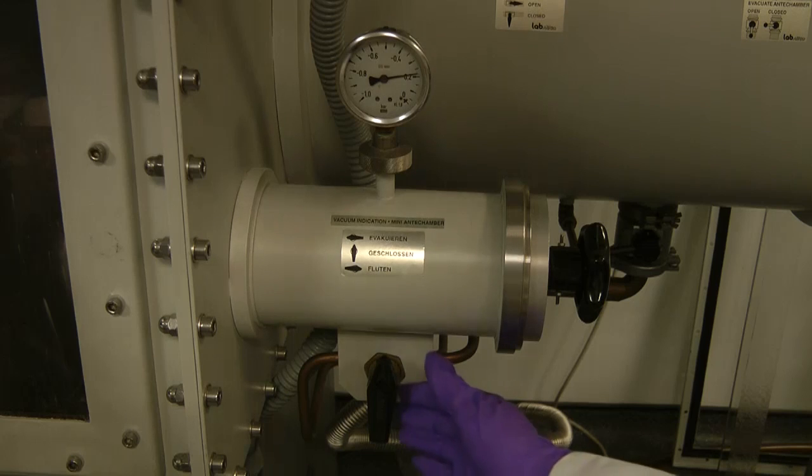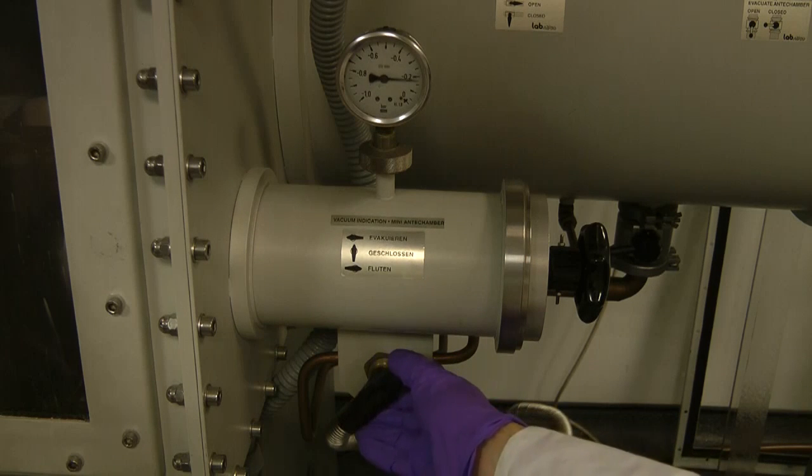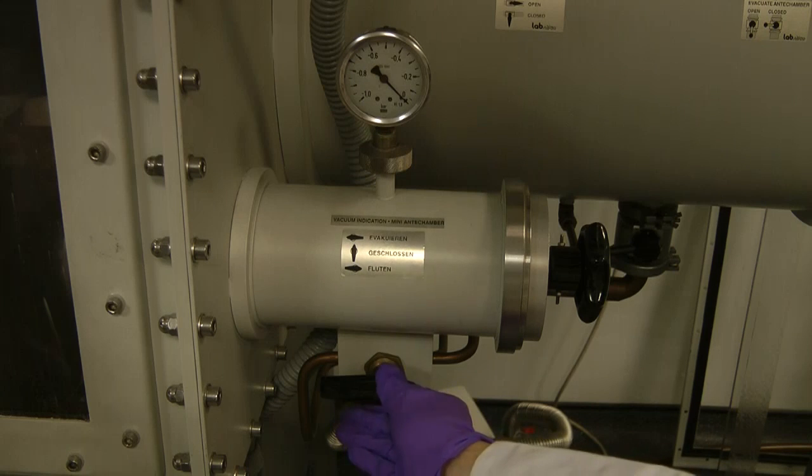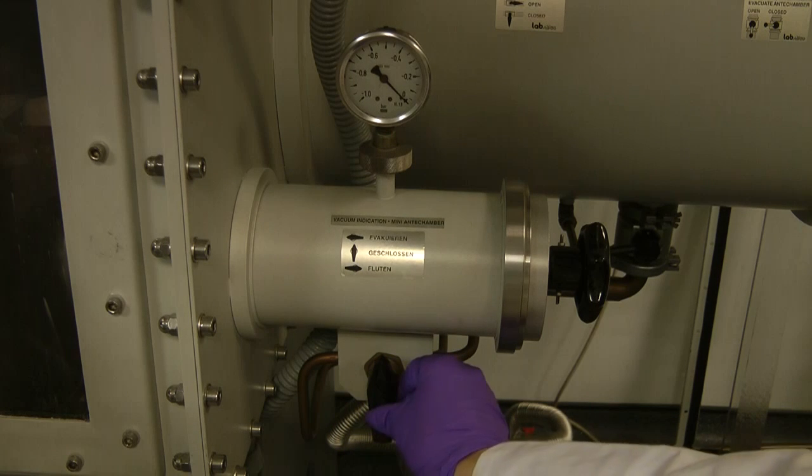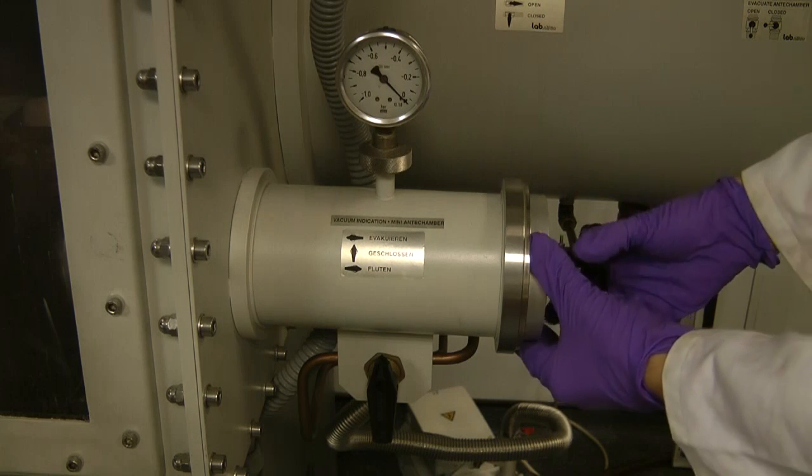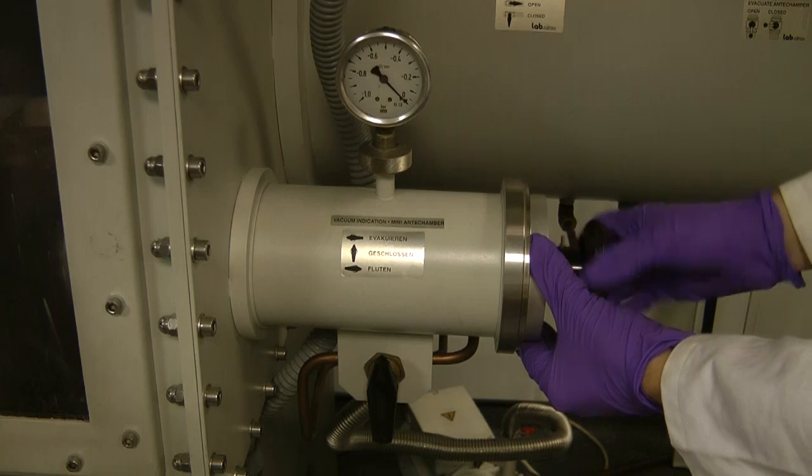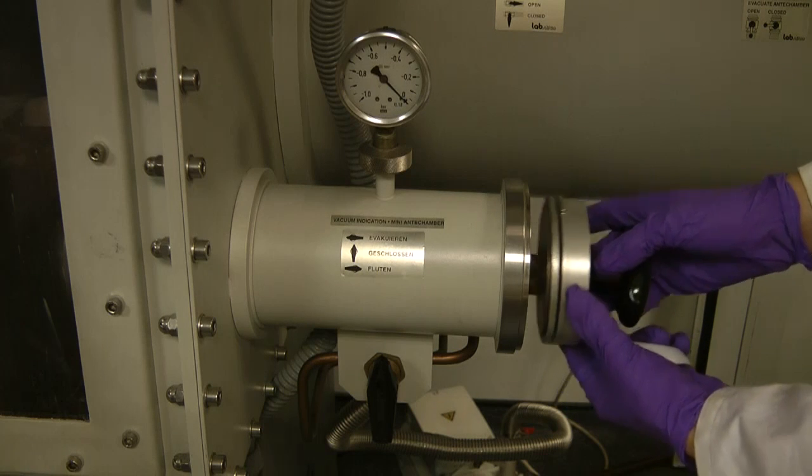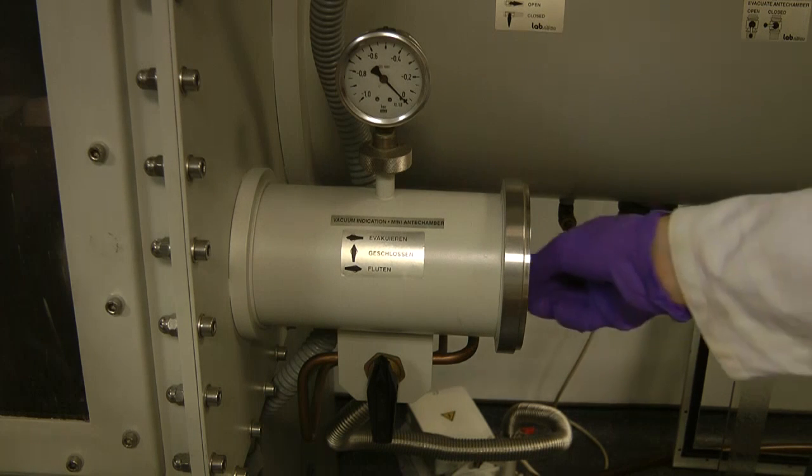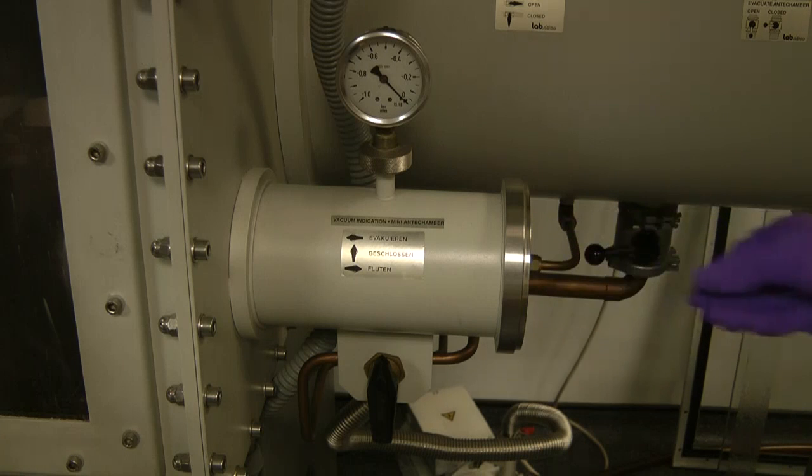To use the anti-chamber, first ensure the pressure gauge reads room pressure, or zero. Then ensure the valve is closed. Open the anti-chamber by unscrewing and twisting anti-clockwise. Place the items to be put into the glove box inside the anti-chamber.